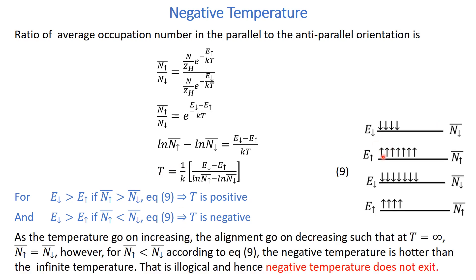Consider the lower energy level with spin-up and the higher energy level with spin-down. Suppose we have 7 atoms in the parallel state and 4 in the anti-parallel state — this corresponds to a positive temperature. However, if the number of atoms in the anti-parallel state exceeds those in the parallel state, this corresponds to negative temperature. But this is not physically possible, because as temperature increases, the parallel alignment is disrupted and atoms move from the parallel to the anti-parallel state.